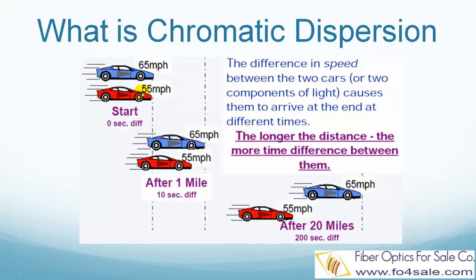As represented by the blue car and the red car in this picture, even though they start at the same time, they arrive at the destination at different times. This time delay is called chromatic dispersion. Here, 'chromatic' stresses the fact that the time delay depends on the color difference, or wavelength difference, between the lights.